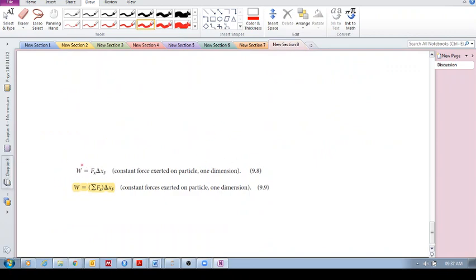9.8 is work, this is exerted on a particle. A single force exerted on a particle. So the work done is the force multiplied by the displacement of the particle, right? Or, work is the sum, right, if there's your particle, you've got many forces acting on this particle. That's the sum, the vector sum, the resultant force, the vector sum of the forces, multiplied by whichever direction you have that xf.